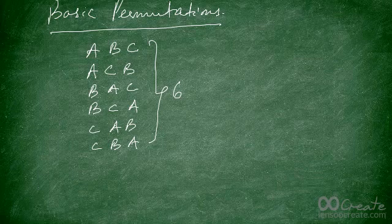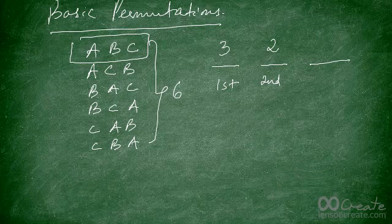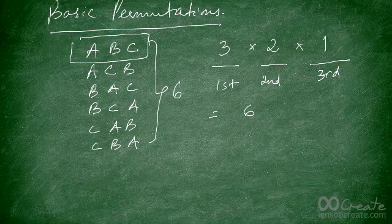Create three dashes for the three spots. For the first spot, you have three options (A, B, or C). For the second position, you have only two options, since one letter was already used. For the last position, you have only one option left. Multiply these: three times two times one equals six. This is also equal to three factorial, since three factorial is three times two times one, giving you six.